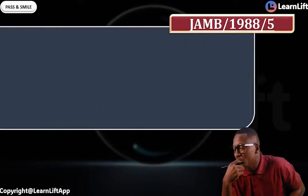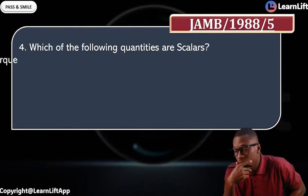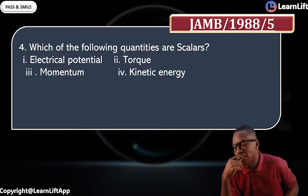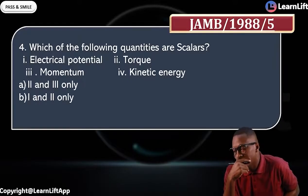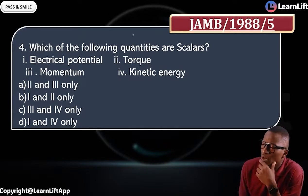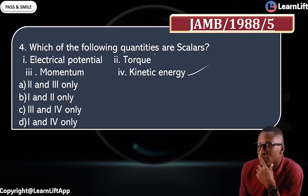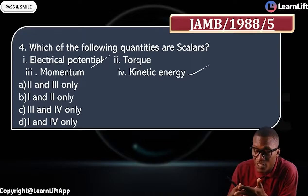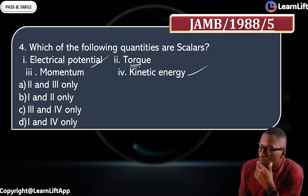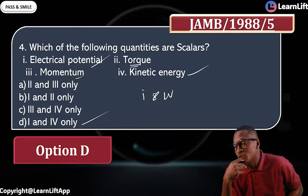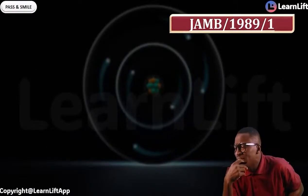JAMB 1988: which of the following quantities are scalars? Options include electric potential, momentum, and kinetic energy. Work, energy, and power are all scalars — so kinetic energy is scalar. Electric potential is scalar because voltage and EMF are scalars. But momentum is a vector. So the scalars are kinetic energy and electric potential — that's options one and four, making option D the answer.